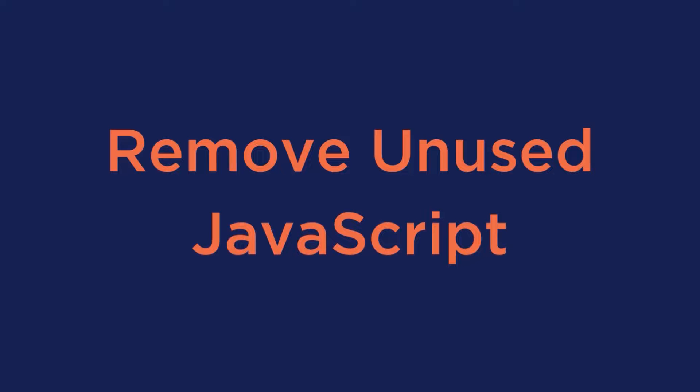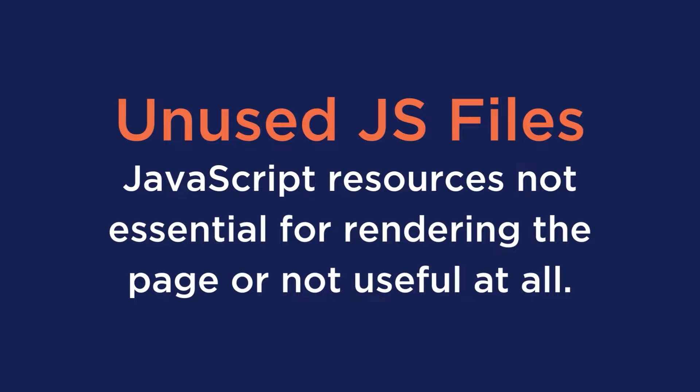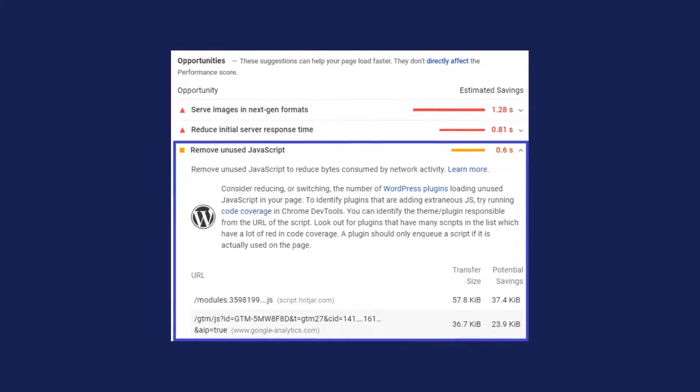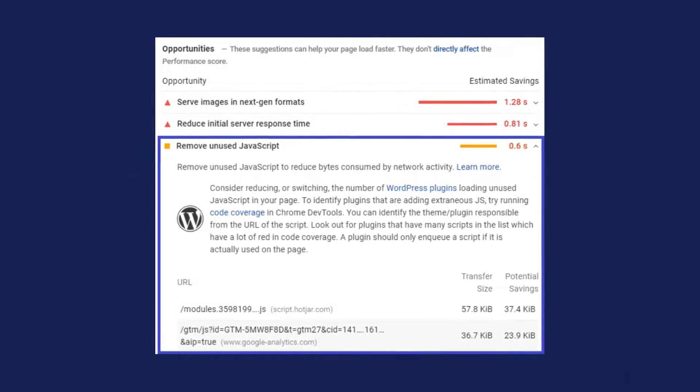Next is to remove the unused JavaScript. You can tackle the JavaScript issues by removing the unused JavaScript files that slow downloading time and make the interactivity worse. Unused JavaScript files are the JavaScript resources not essential for rendering the page or not useful at all. Examples of unused JS files are third-party JavaScript files such as analytics and ad tracking codes. PageSpeed Insights reports shows you a list of all the unused JS files that you should take care of.